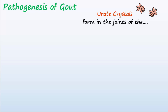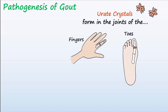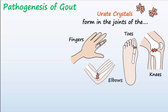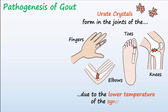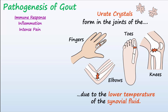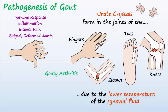These crystals form mainly in the joints of the toes, fingers, knees, and elbows, due to the lower temperature of the synovial fluid. This lower temperature doesn't allow as much of the urate to be dissolved, so it forms crystals. The crystals elicit an immune response, bringing about inflammation and intense pain. Over time, uncontrolled gout can lead to bulged, deformed joints, a condition called gouty arthritis.